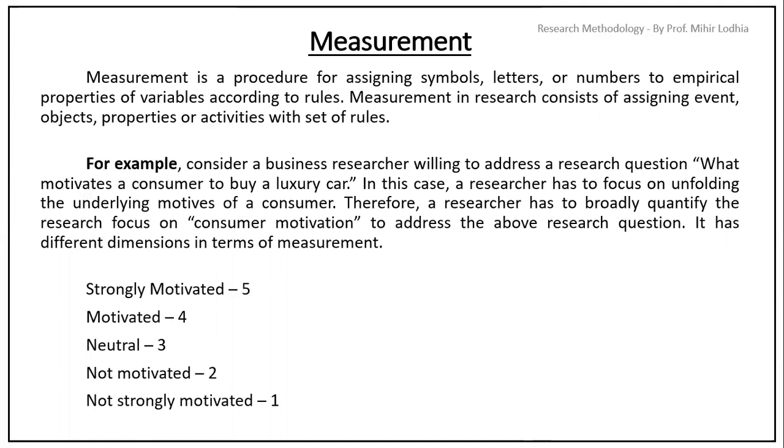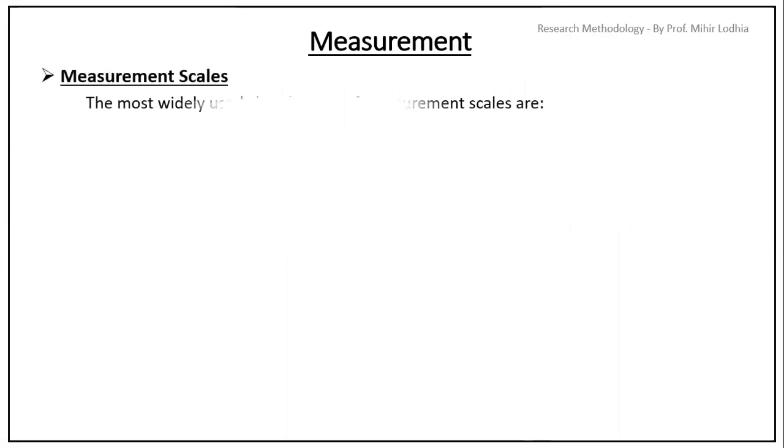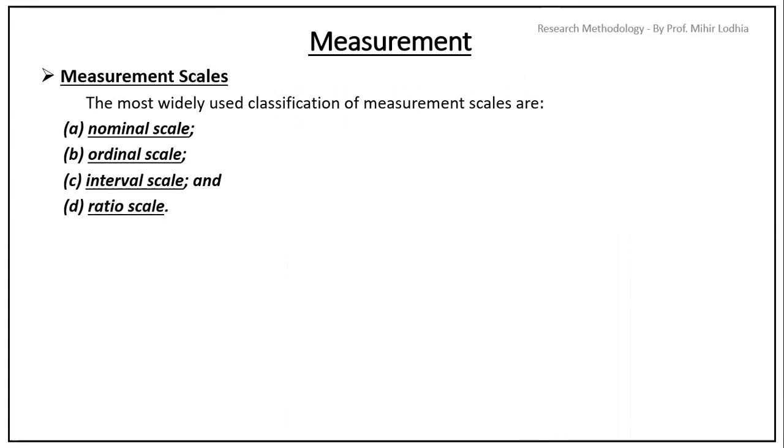From 1 to 5 you can see the measurements are given from strongly motivated to not strongly motivated. Measurement scales. The most widely used classification of measurement scales are nominal scale, ordinal scale, interval scale and ratio scale. Let's decode one by one.